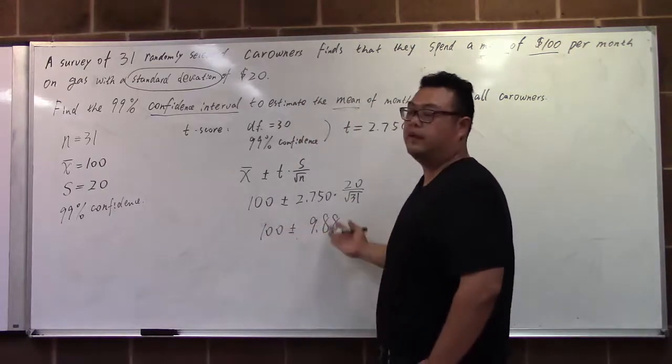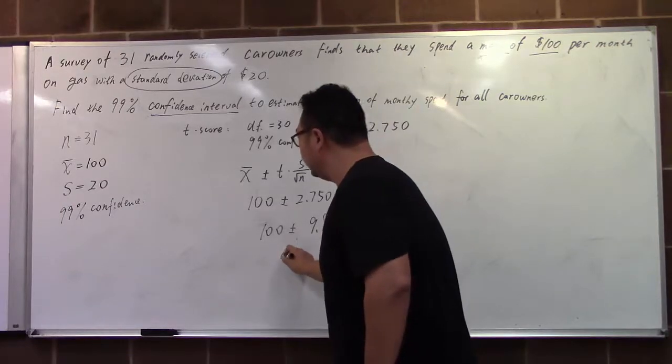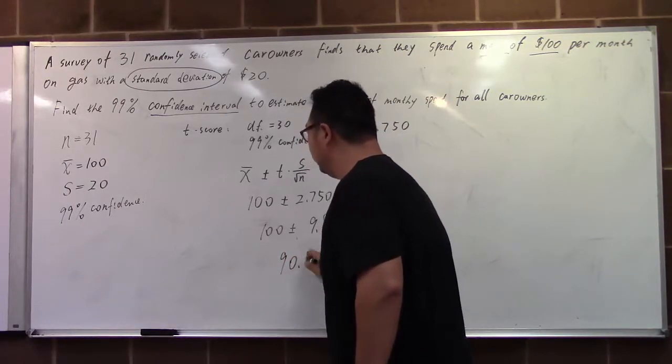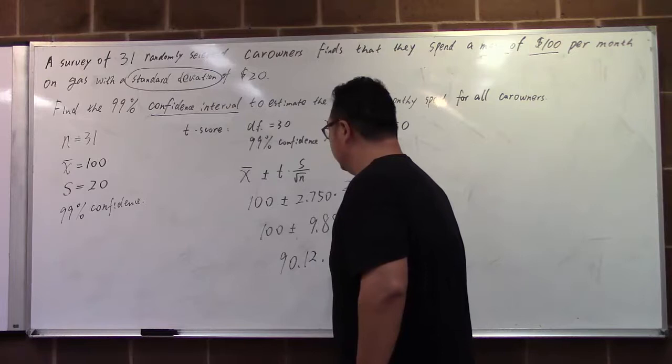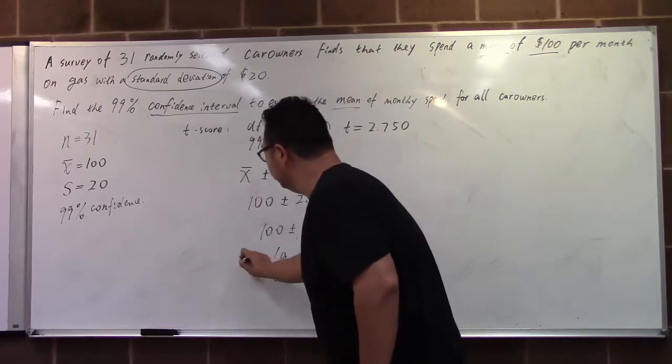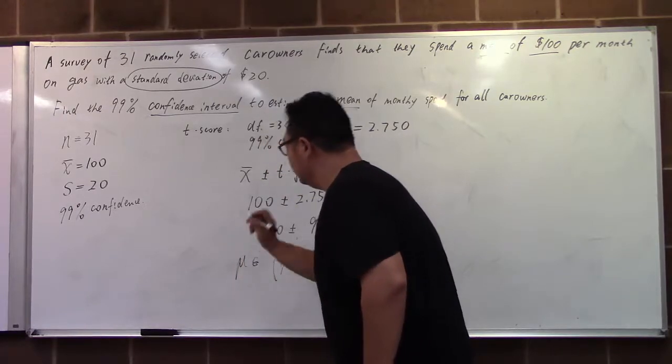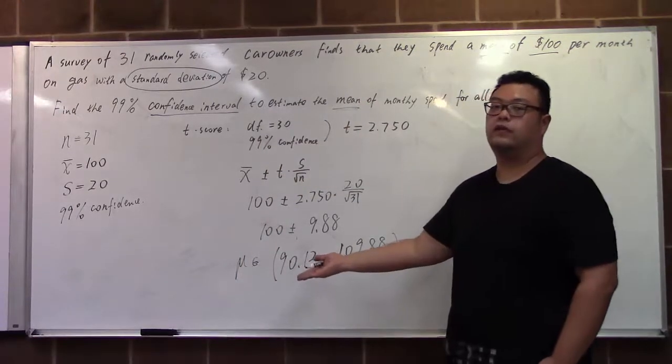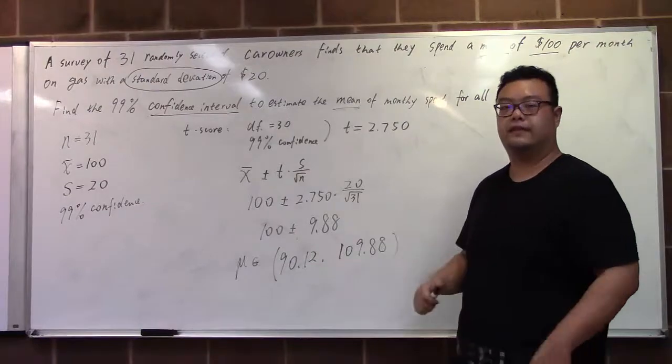We use 100 minus and plus this value. We get the mean between 90.12 and 109.88. So our population mean will fall between these two values.